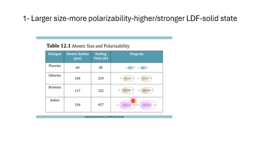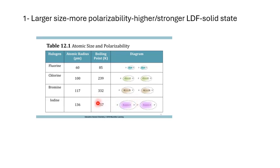That is the reason iodine is a solid at room temperature — because of stronger IMF. Bromine is a liquid at room temperature because it is smaller than iodine but bigger than chlorine, which is a gas. Chlorine is a gas at room temperature, smaller in size compared to bromine. Fluorine is the smallest and also exists as a gas at room temperature because the outer electron is very close to the nucleus, so electron distortion does not form as easily as in iodine. In iodine, the dipoles can form very easily — more LDF, stronger IMF, higher boiling point.